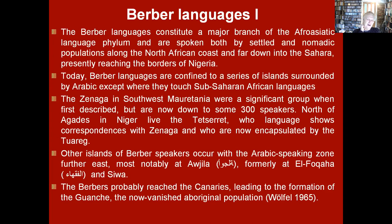The most far-flung group are the Zanaga in southwest Mauritania. When French colonists first arrived in the 19th century they were a significant population, but unfortunately they are now down to some 300 speakers. Quite recently described are the Tetseret, the Berbers of Agadez in Niger, whose language shows correspondences with Zanaga but who are today entirely surrounded by Tuareg. Other intriguing islands of Berber speakers occur in Libya at Ajila and at the famous oasis of Siwa. It is generally supposed that Berbers probably reached the Canary Islands and are at the basis of the people known as the Guanche, the aboriginal population which has unfortunately now disappeared.